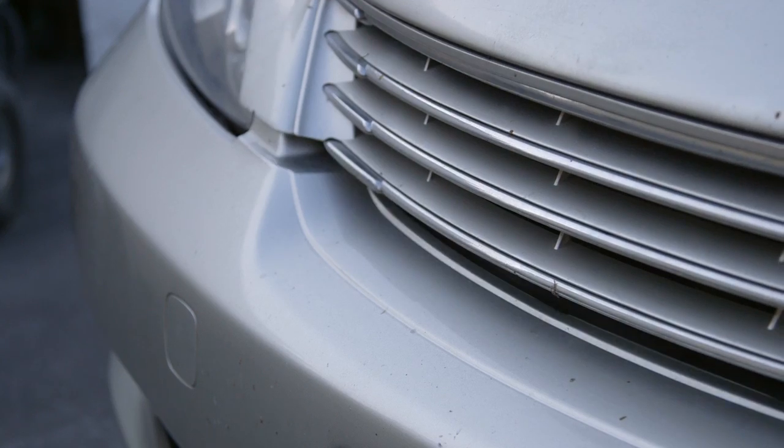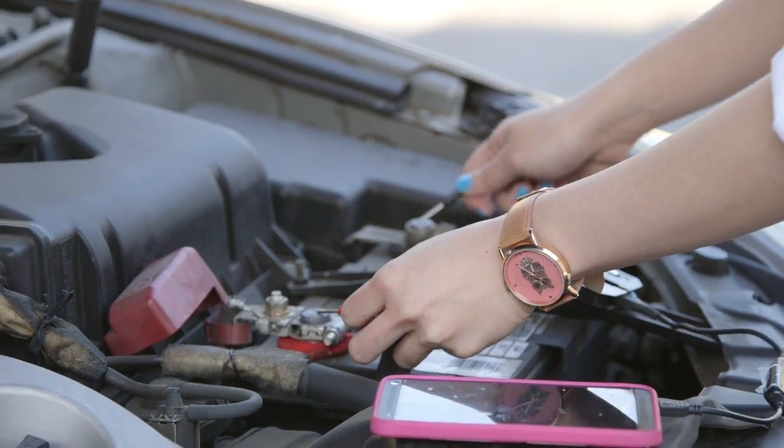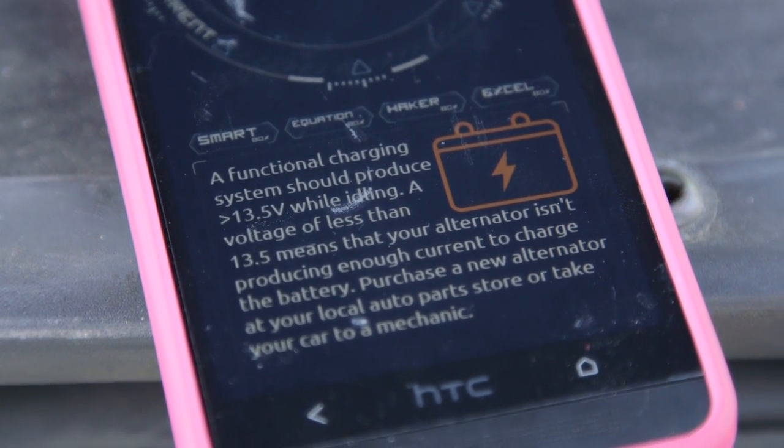What makes Volset so different? Volset intelligently provides information based on your reading. For instance, if you measure a car battery, Volset will tell you the normal measurement range for a good battery.